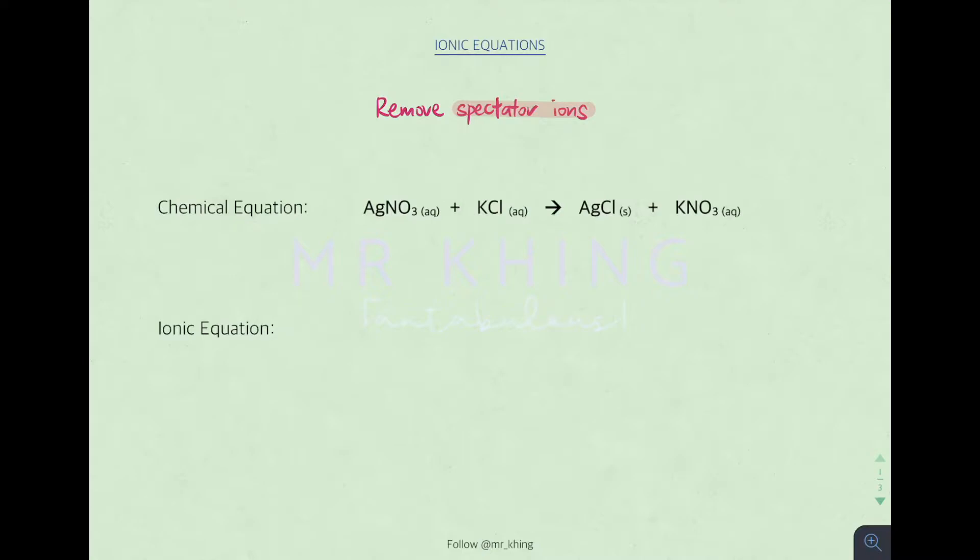Very easy. There's one tip for you. To look for ionic equation, what you can do is compare the state symbol. Basically, you just include the elements that have different state symbols before and after. Those that have the same state symbol before and after, this is what we call spectator ions.